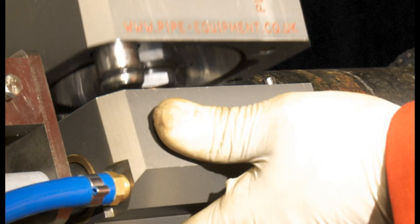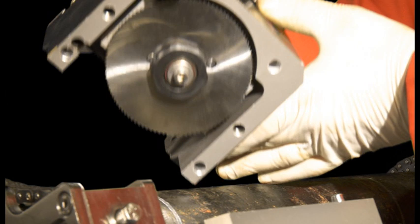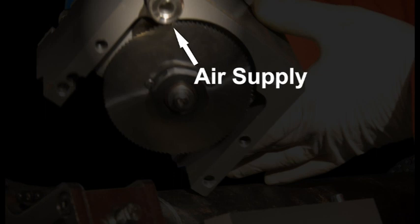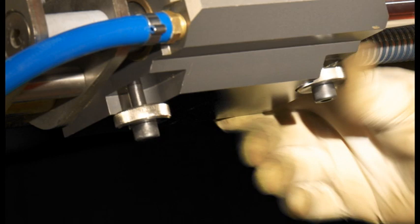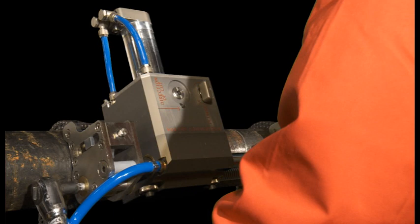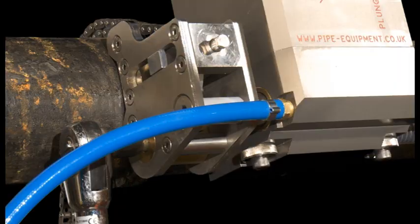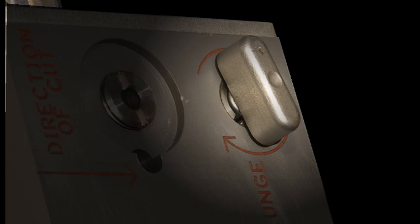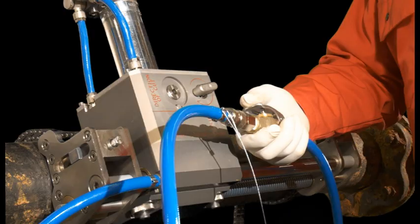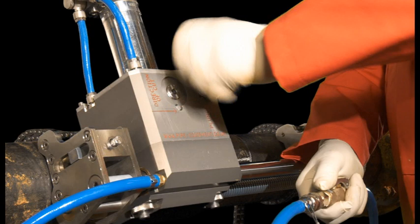Attach the cutter module to the longitudinal module. For safety reasons, the cutter blade cannot spin while exposed, as the motor gets its air supply via one of the other modules. The cutter module is connected to the longitudinal module by two thumb bolts. Use the air drive ratchet to check the correct direction of movement of the cutter, reversing the direction if necessary. The depth of cut is controlled using the plunge handle.